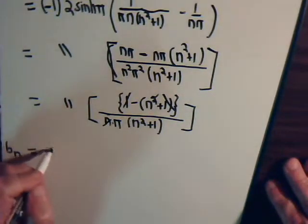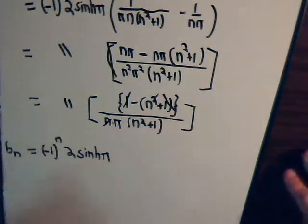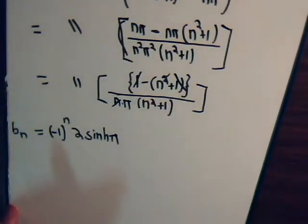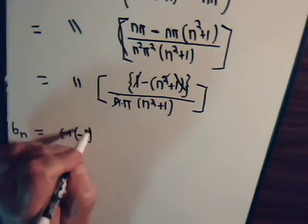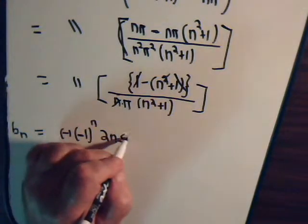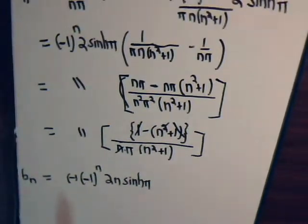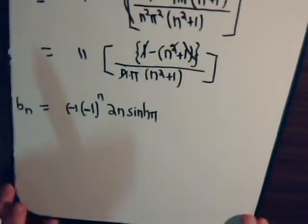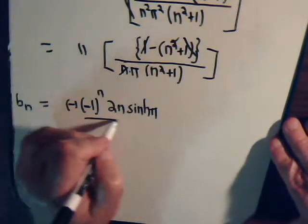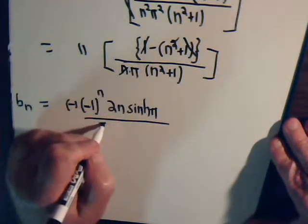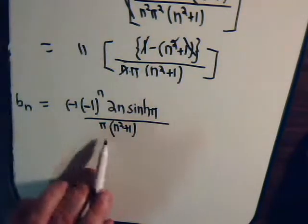So b sub n equals: we have minus one to the n times two times hyperbolic sine of pi, and then in the numerator we insert minus n — the minus sign combines to give minus one to the n plus one times two n times hyperbolic sine of pi — divided by pi times (n squared plus one). That finally is our b sub n.